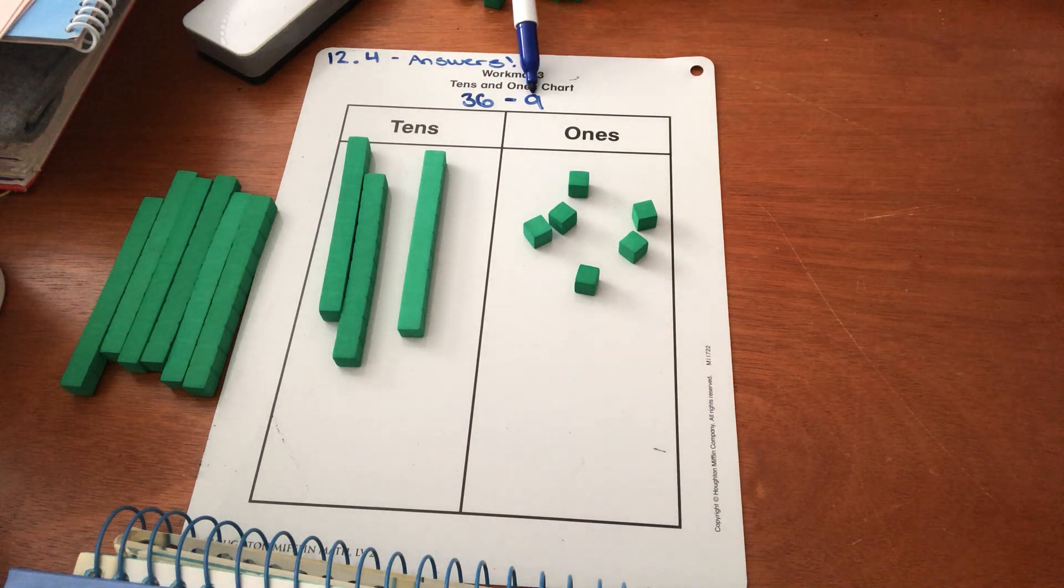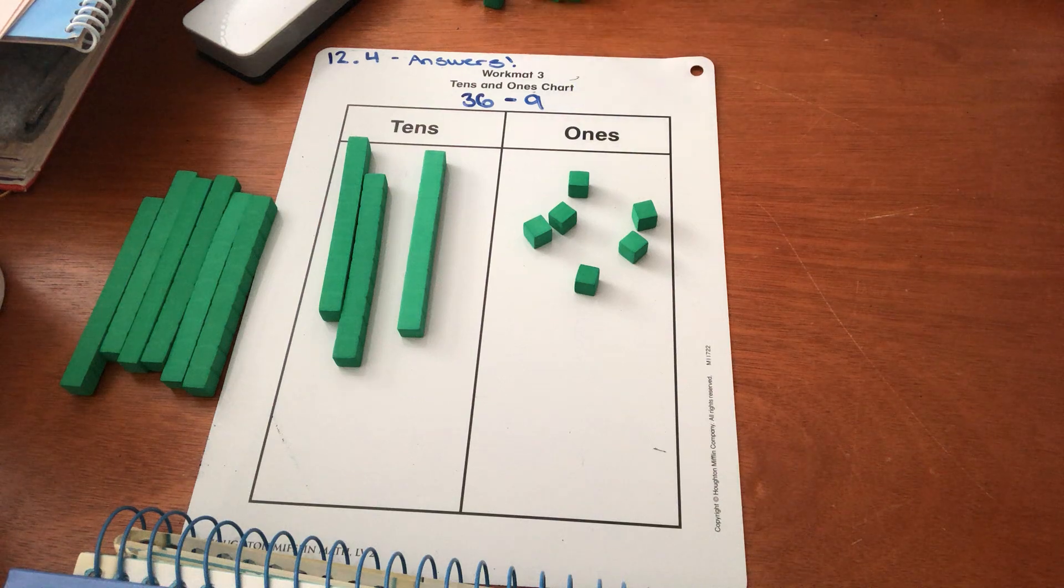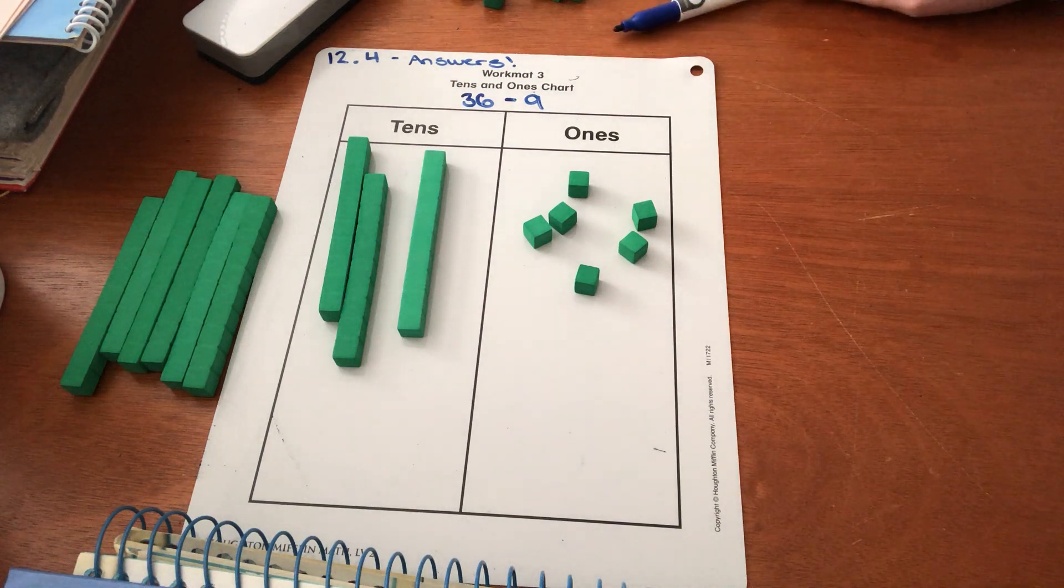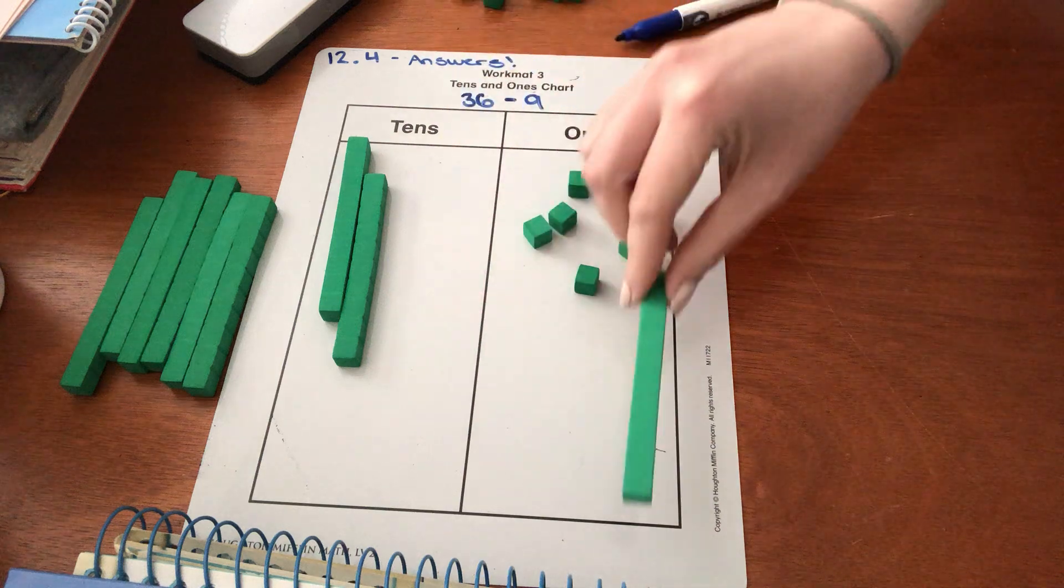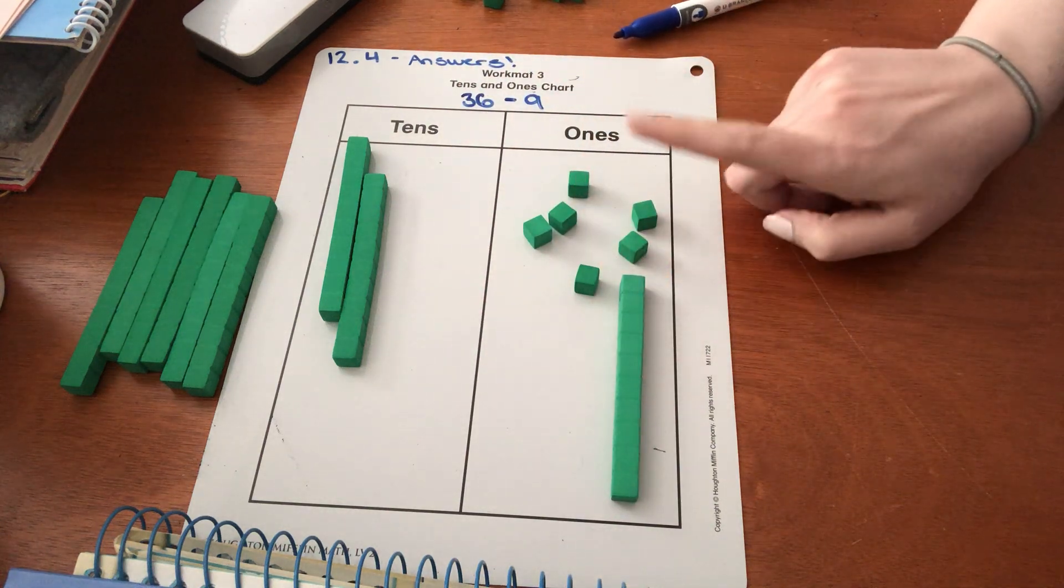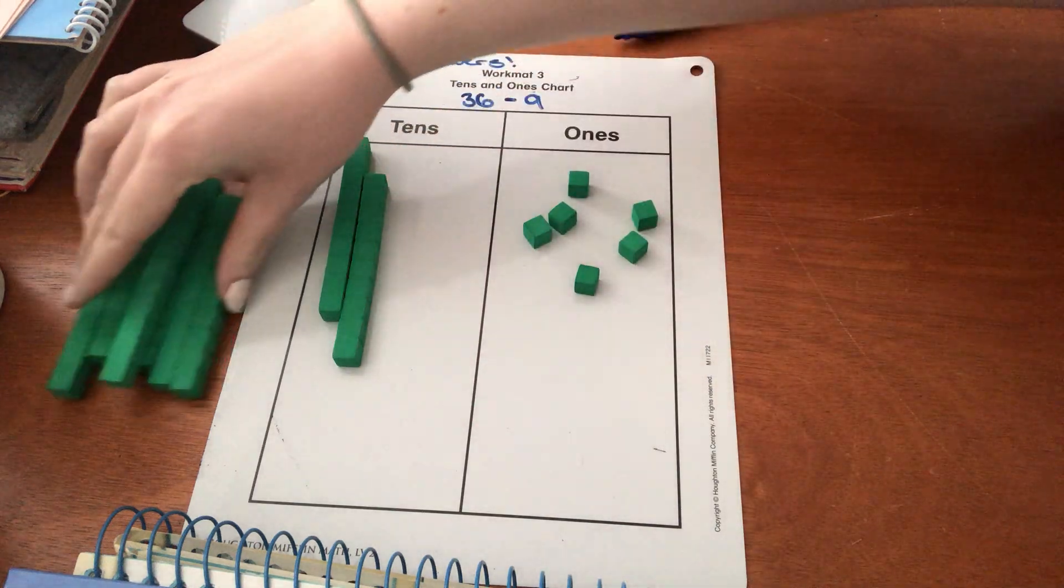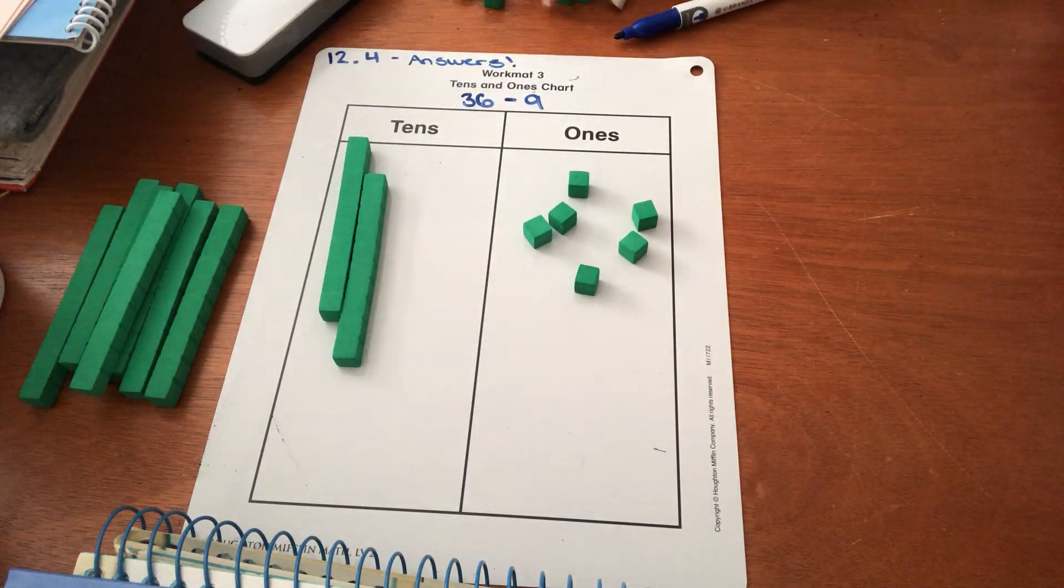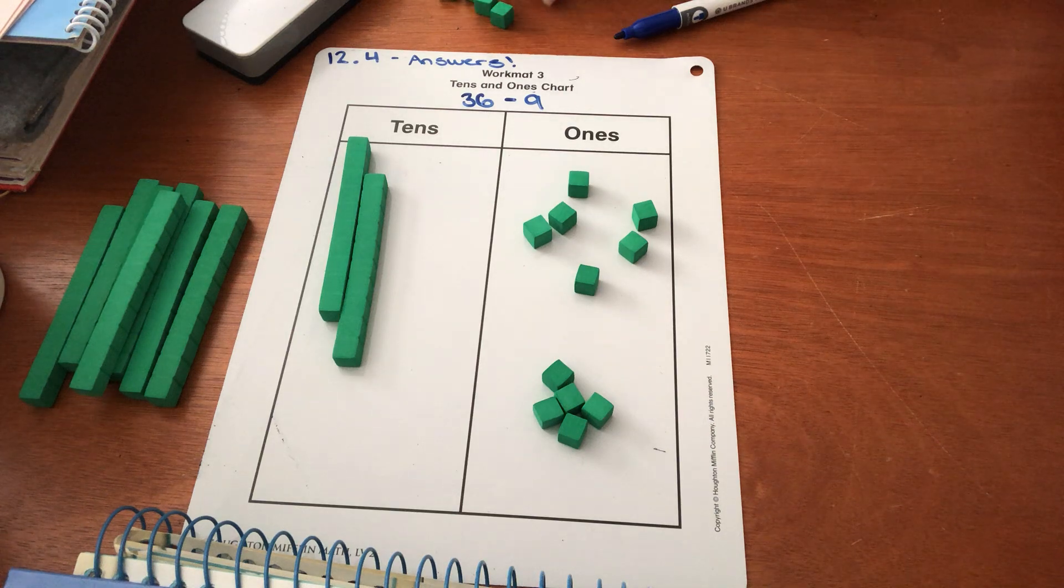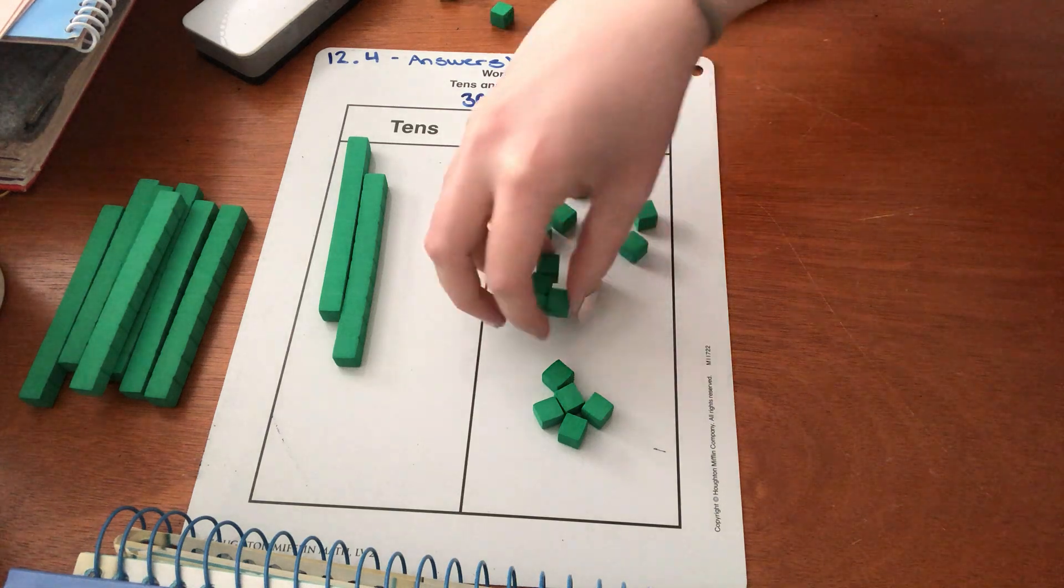Can we take away 9 from the ones place? We're deciding if we need to regroup now. Do we need to regroup? Yes, we do need to regroup. So I'm going to take this 10 stick, put it over here, but I can't have a stick over here. I need ones cubes. So I'm going to put that away and bring in one, two, three, four, five, six, seven, eight, nine, ten. Awesome.